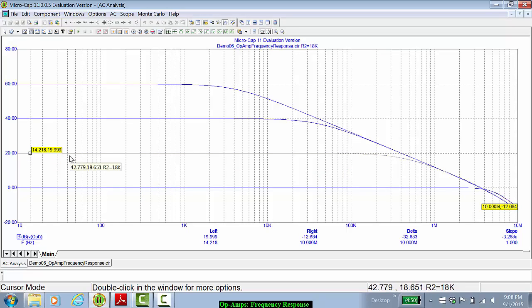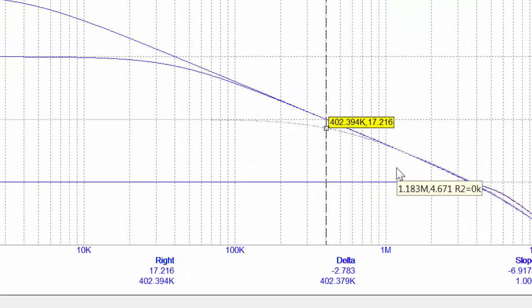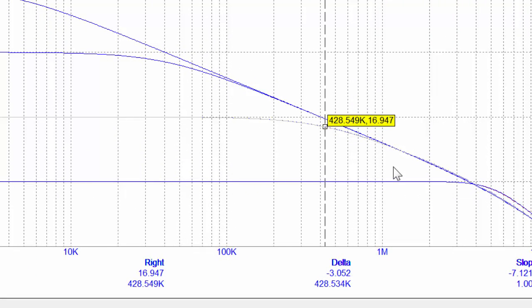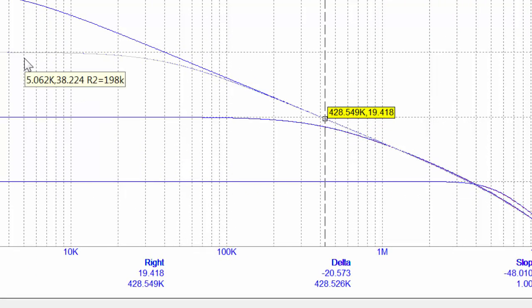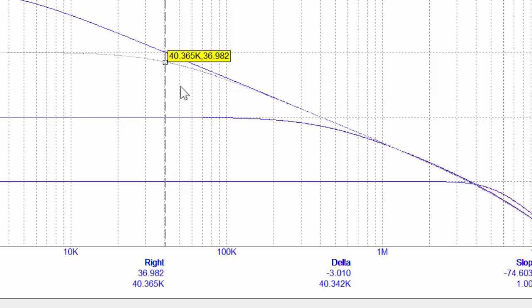So for example, if I choose the 20 dB curve and try to find my 3 dB frequency there, that will be about 430 kilohertz. If I choose the 40 dB one, then the 3 dB frequency is about 40 kilohertz, which is what we expected: take 4 megahertz and divide by 100 and you'll get 40 kilohertz.